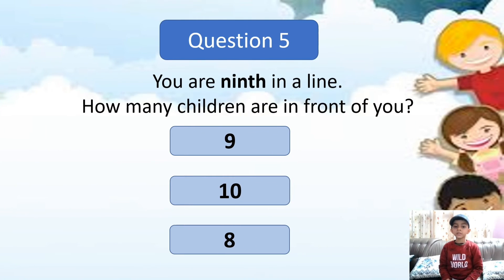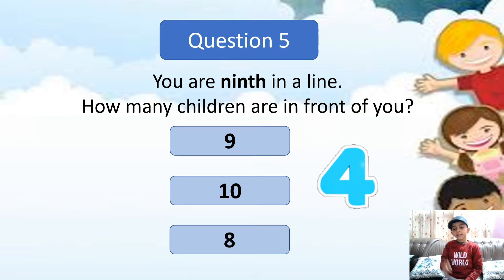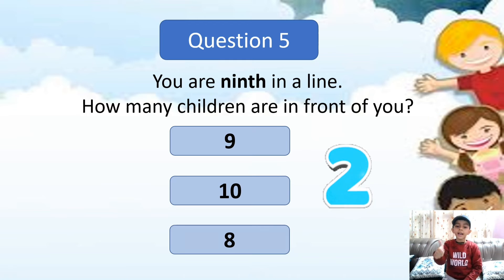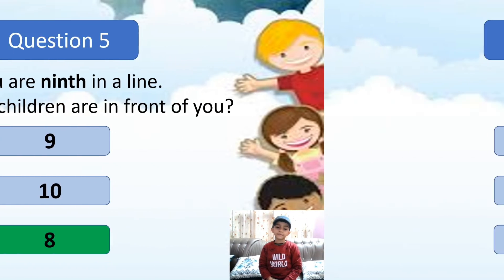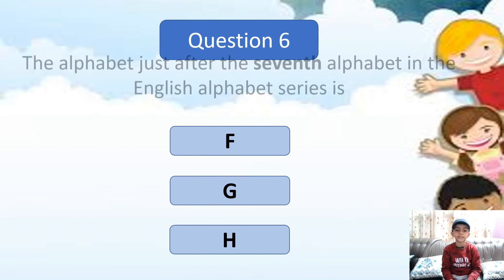Question 5: You are 9th in a line. How many children are in front of you? Can you think? Yes, the answer is 8.